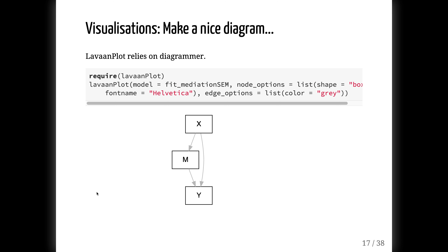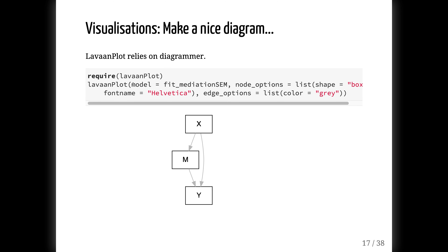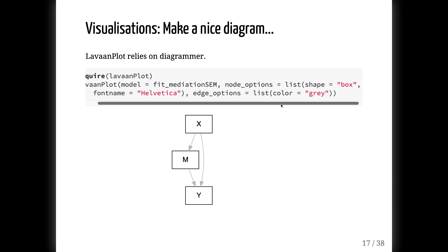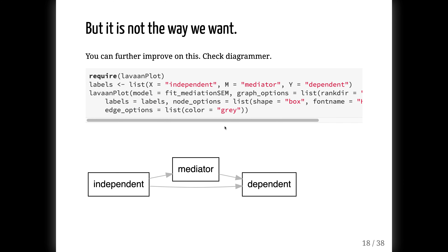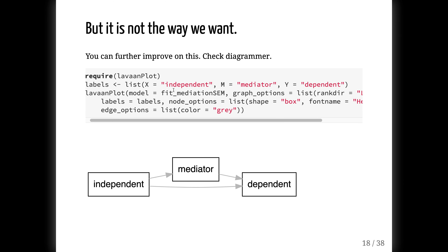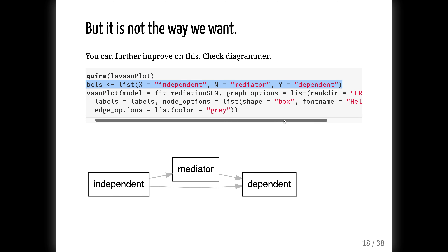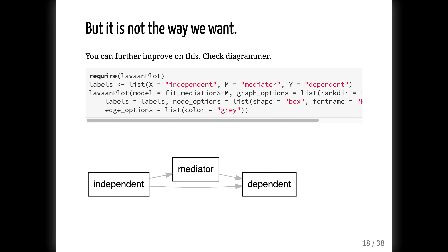Just to remind you, we can also plot these models. This is how we do it with lavaanPlot. We take a model and can specify various options — for example, that nodes should be boxes, the font, and the color of the arrows. By default the layout is top-down, but we can change it to go sideways so it reads as independent, mediator, then dependent. We do this by first specifying the labels, which we then feed into lavaanPlot.